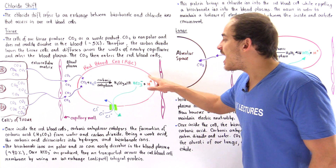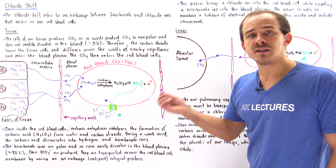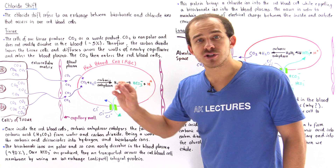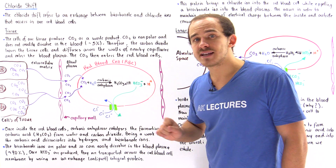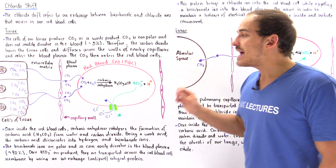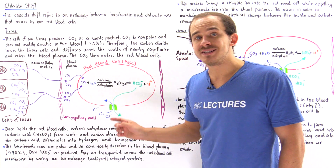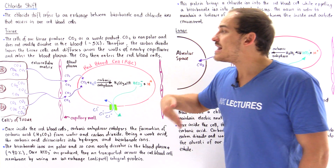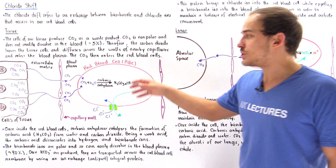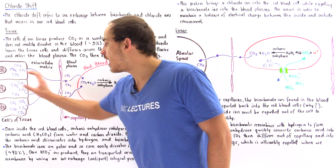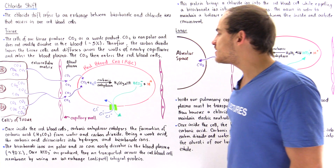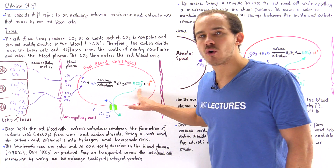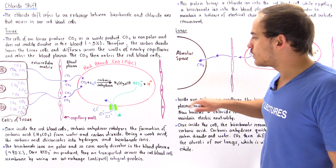This hydrogen ion ultimately leads to the Bohr effect. It binds onto a special allosteric site on our hemoglobin, causing hemoglobin to decrease its affinity for oxygen. This leads to more oxygen diffusing out of the red blood cell and into the cells of our tissue.